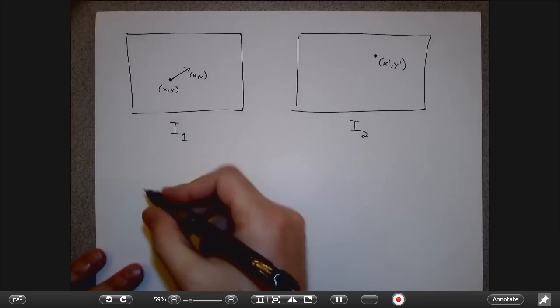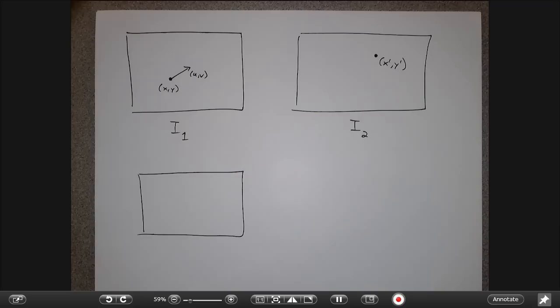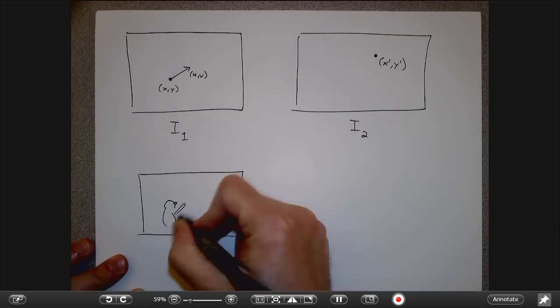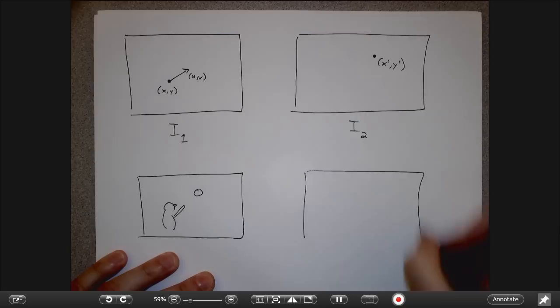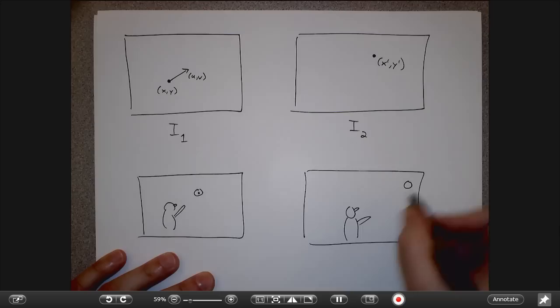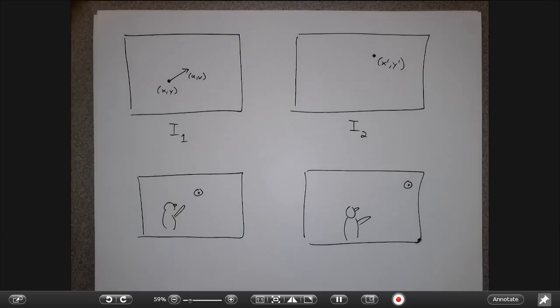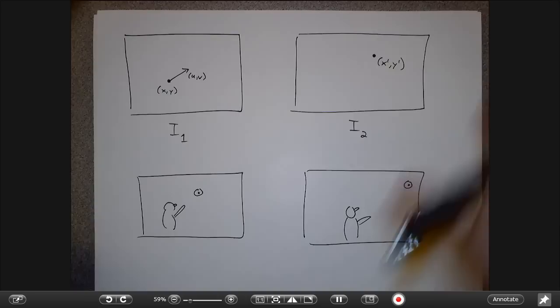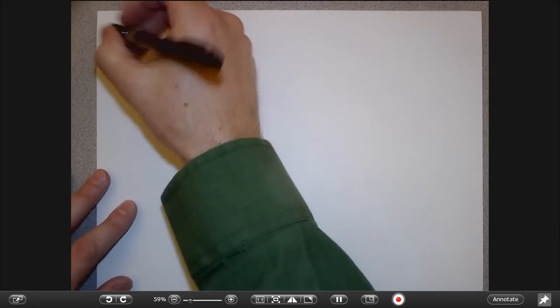If I have a bunch of objects and they're all independently moving, then in theory that correspondence could occur anywhere. For example, if I have a guy playing volleyball and the camera's moving, the guy's moving, and the ball's moving, then in theory the correspondence for the ball, depending on how he hits it, could be anywhere in the image. So in the most general case, when you've got not only camera motion but also independent object motion, you do have to search all over the image plane. However, there are some important situations where the correspondence is extremely constrained — that's the concept for today: epipolar geometry between a pair of images.